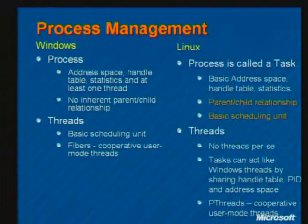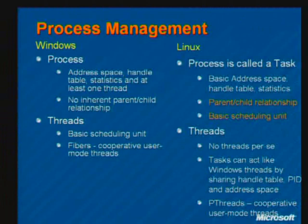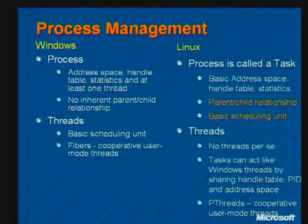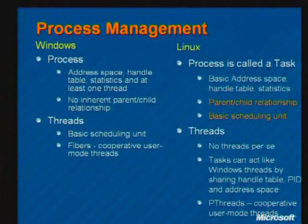There is a parent-child relationship between tasks in Linux: a child task won't terminate until somebody asks for its exit status, which by default is supposed to be the parent task. If a parent doesn't ask, a background daemon handles it. A task is both the equivalent of a Windows process and a Windows thread depending on how it was created. In a multi-threaded Windows process, threads share the address space and resources of their process.